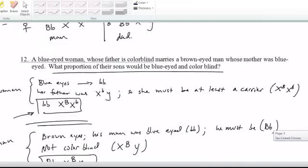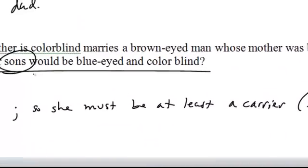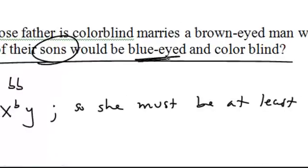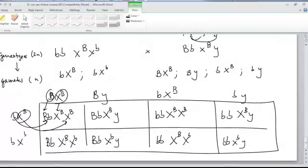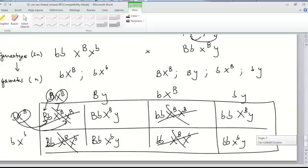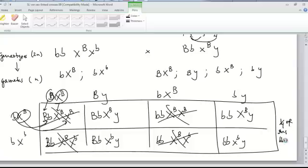Looking back at the question — what proportion of their sons would be blue-eyed and colorblind? Sons are the offspring with a Y chromosome, so out of the eight offspring in the square, four are boys. Of those four sons, one is blue-eyed and colorblind. So one quarter of their sons would be blue-eyed and colorblind. If the question had been phrased as what proportion of their children — not just sons — the answer would be one eighth, since only one out of eight total offspring fits that description.